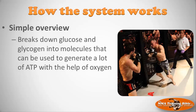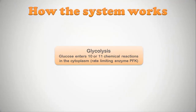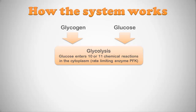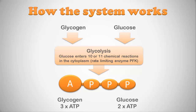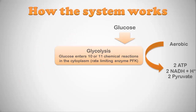How does the system work? You're going to be breaking down glucose and glycogen into molecules that can generate a lot of ATP with the help of oxygen. Glycolysis is a series of enzymatic reactions responsible for breaking apart glucose and glycogen and freeing up energy and hydrogen ion carriers. The two main substrates for glycolysis are glycogen and glucose. You get three molecules of ATP starting with glycogen and two starting with glucose. In anaerobic glycolysis, at the end of glycolysis if there is no oxygen, those pyruvate molecules are converted into lactic acid. In aerobic glycolysis you primarily start with glucose.